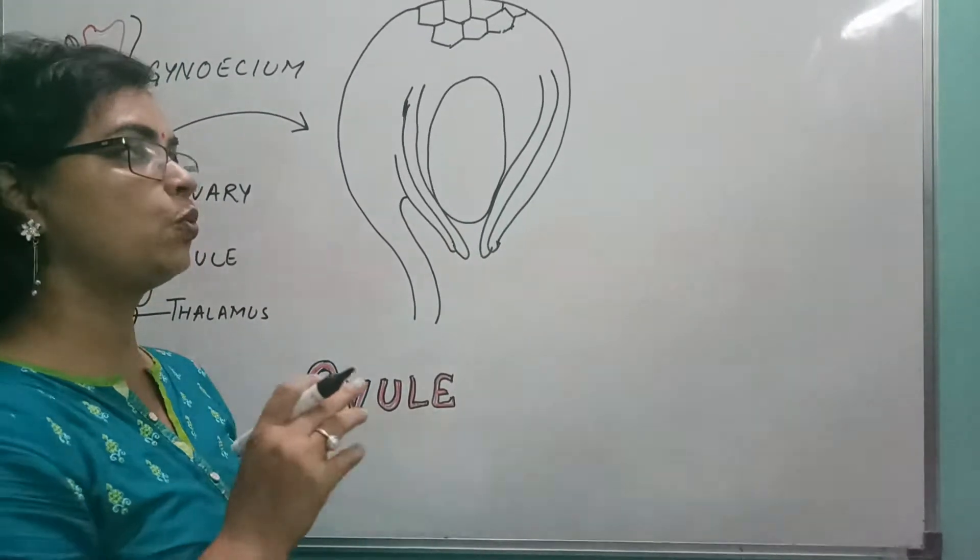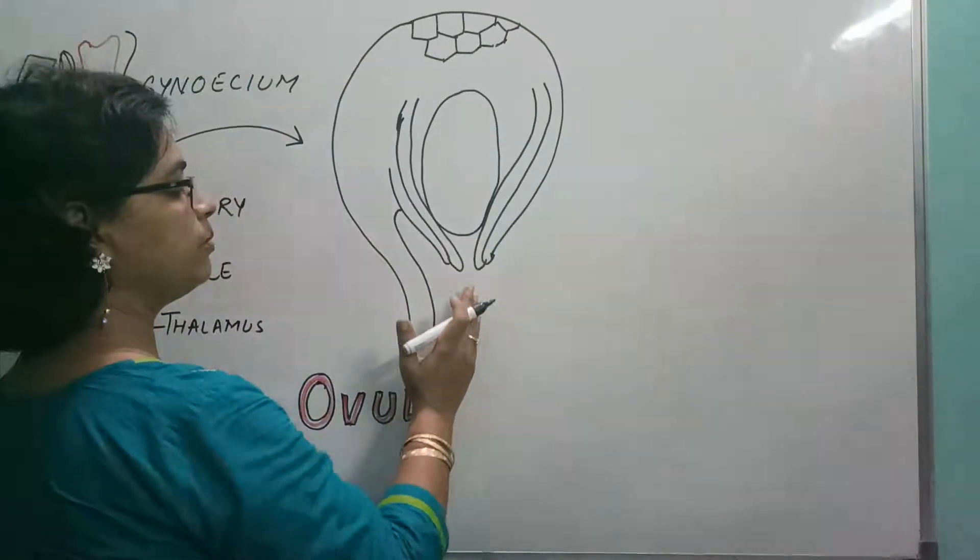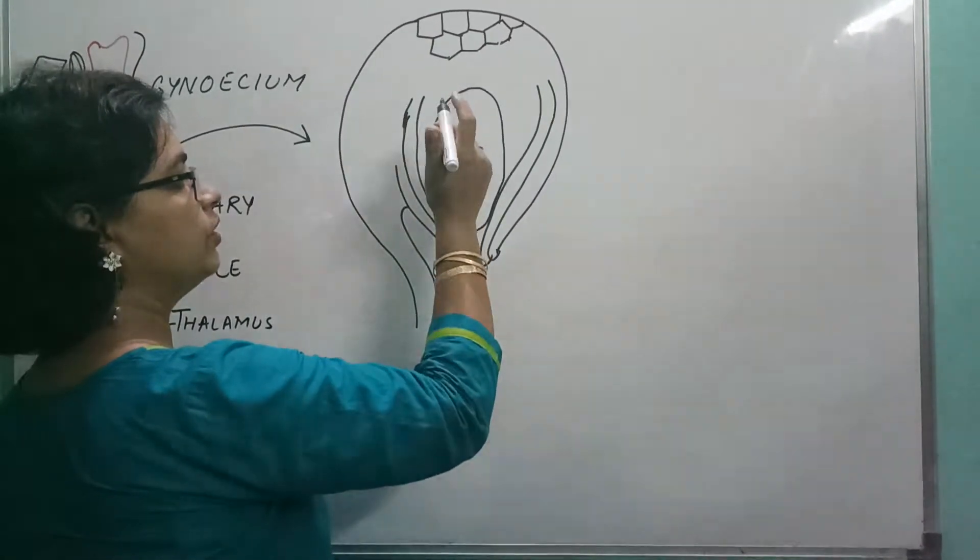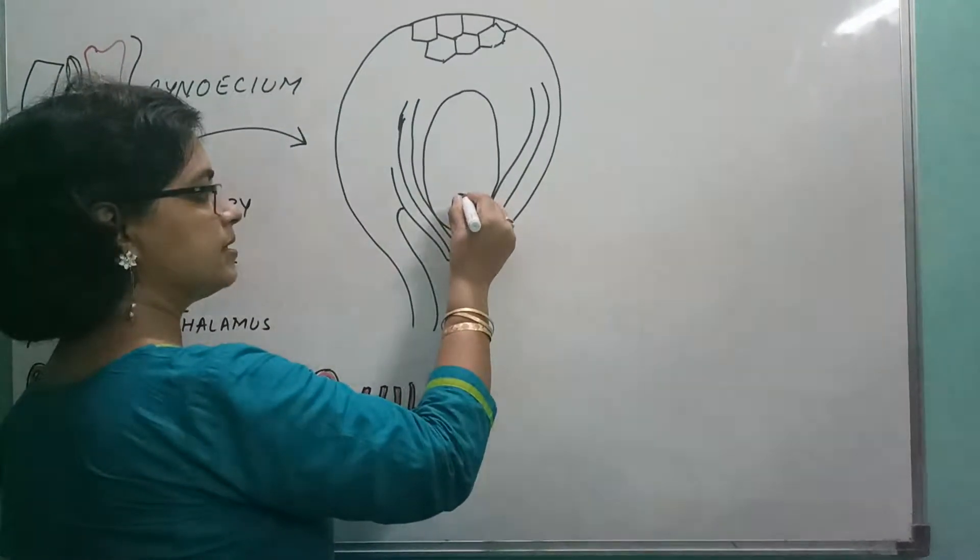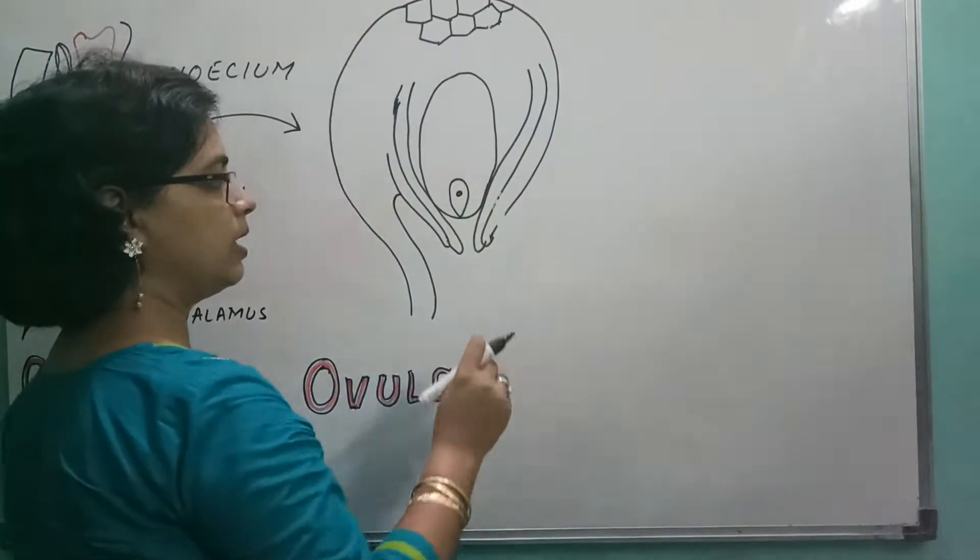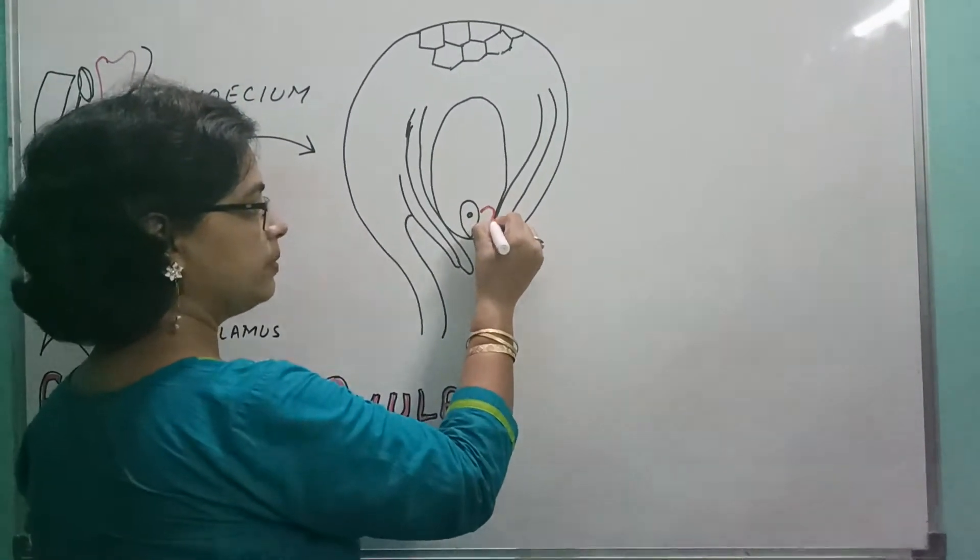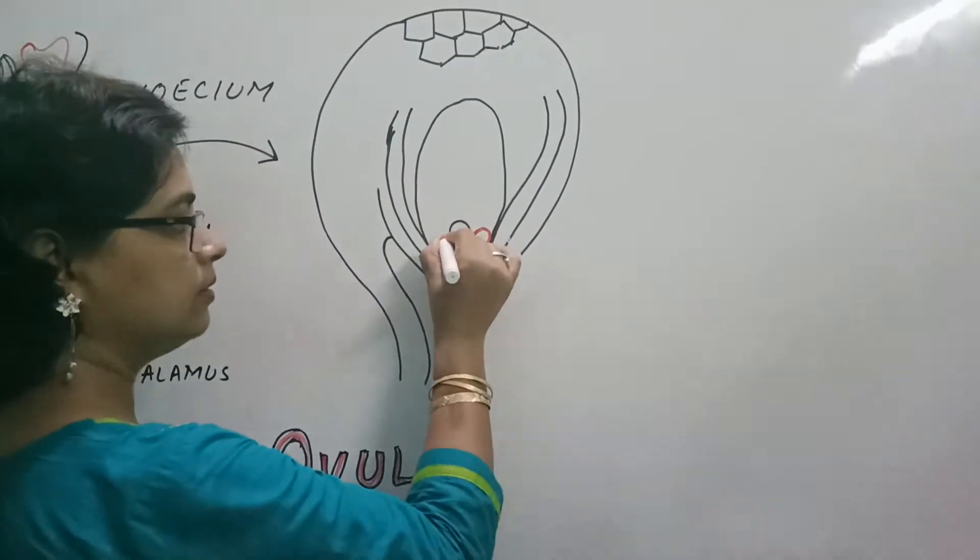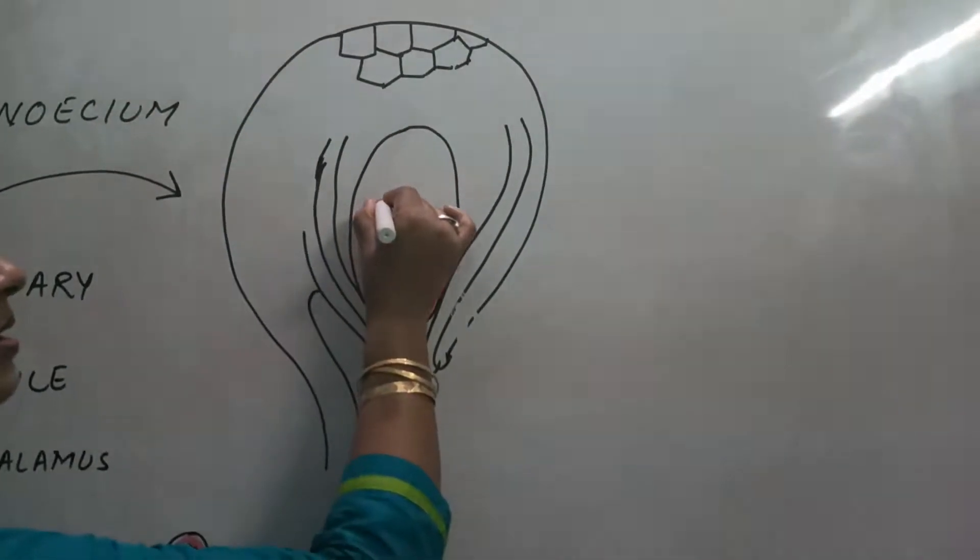Now, search where those cells and nuclei are present. From here, that means from downward to upward, when we move towards the micropyle, there is a big egg cell. This one, followed by two synergids. We will be doing the labeling part later on. Then in between, there is a central cell.